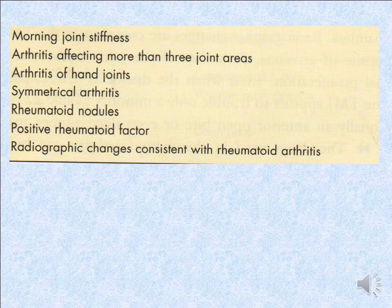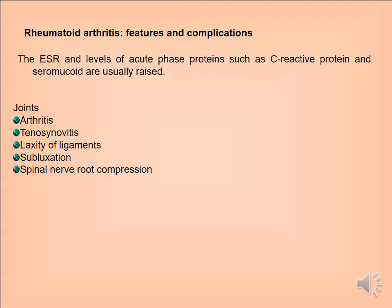The signs and symptoms used to diagnose rheumatoid arthritis most commonly include: morning joint stiffness, arthritis affecting more than three joint areas, arthritis of hand joints, symmetrical arthritis, rheumatoid nodules, positive rheumatoid factor, and radiographic changes consistent with rheumatoid arthritis — all of which help confirm the diagnosis.